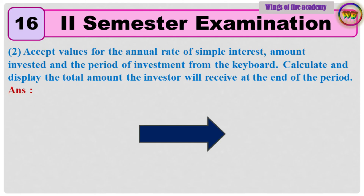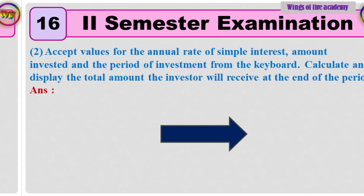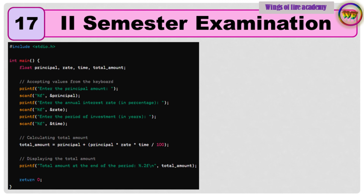2. Accept values for the annual rate of simple interest, amount invested, and the period of investment from the keyboard. Calculate and display the total amount the investor will receive at the end of the period. Answer is given directly.